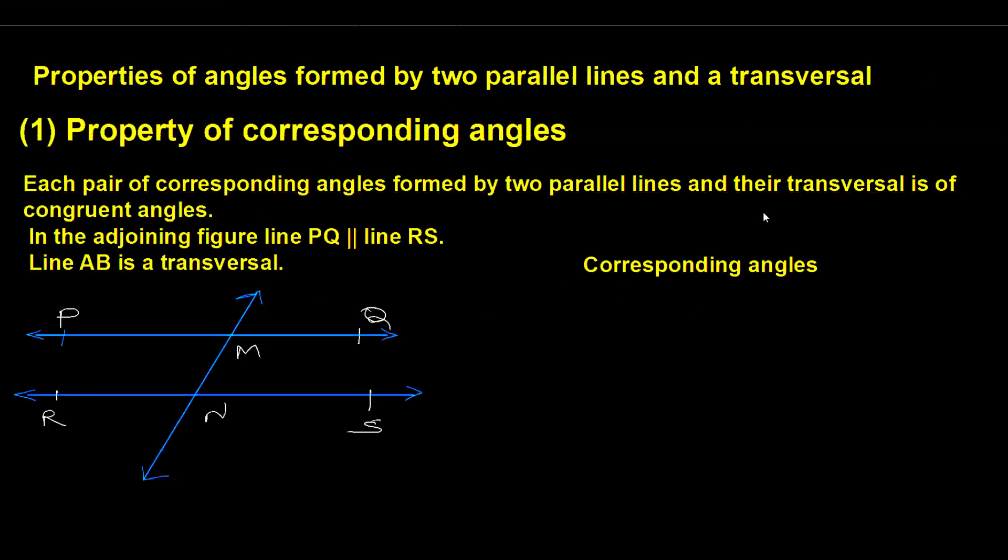Property of corresponding angles: Each pair of corresponding angles formed by two parallel lines and their transversal is of congruent angles. In the adjoining figure, line PQ is parallel to line RS, and line AB is a transversal.